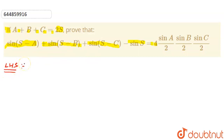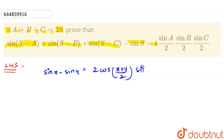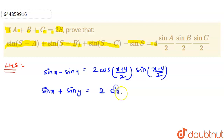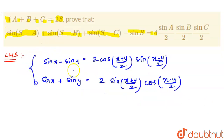We will take two identities here. The first one is sin X minus sin Y, which can be written as 2 cos((X plus Y)/2) sin((X minus Y)/2). The second identity is sin X plus sin Y is equal to 2 sin((X plus Y)/2) cos((X minus Y)/2). These are the two identities we are going to use in this question.